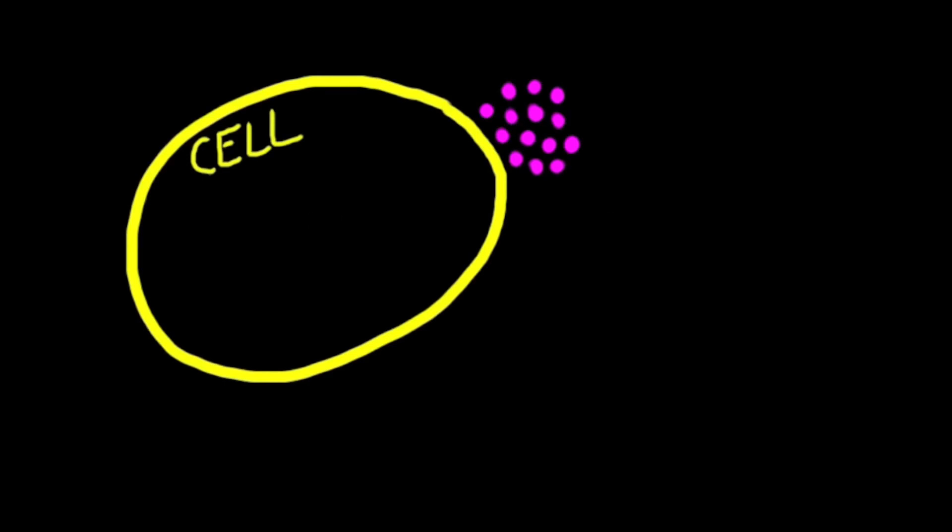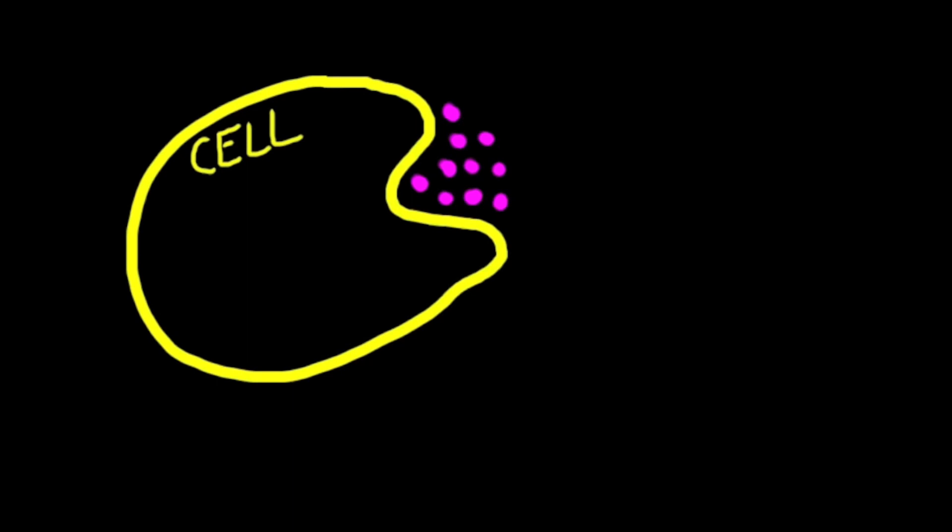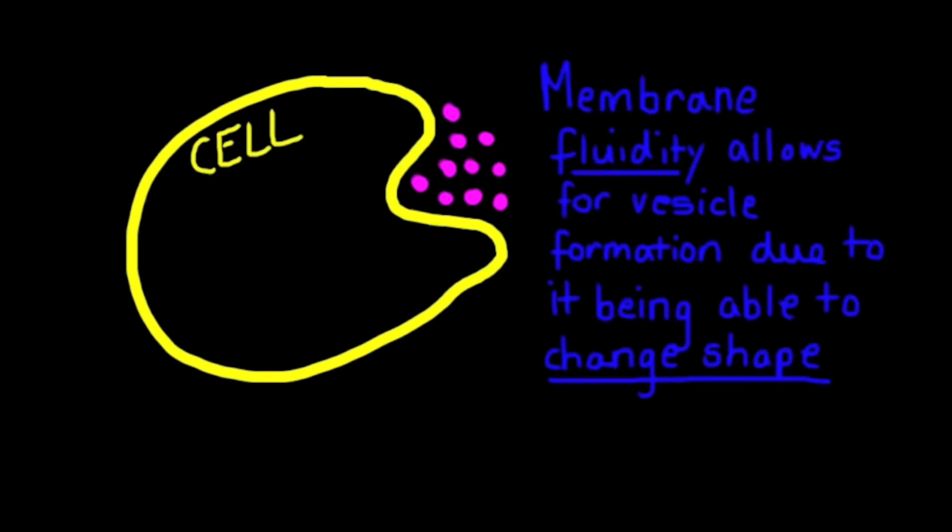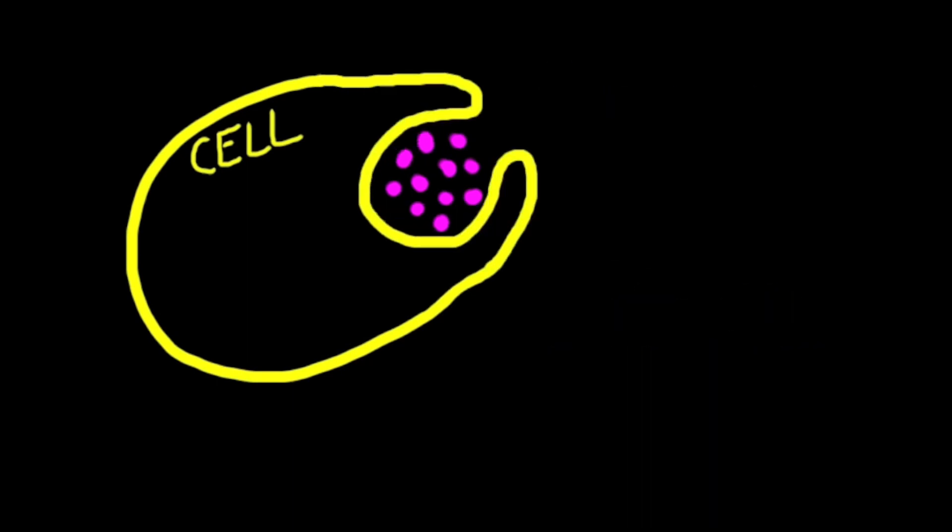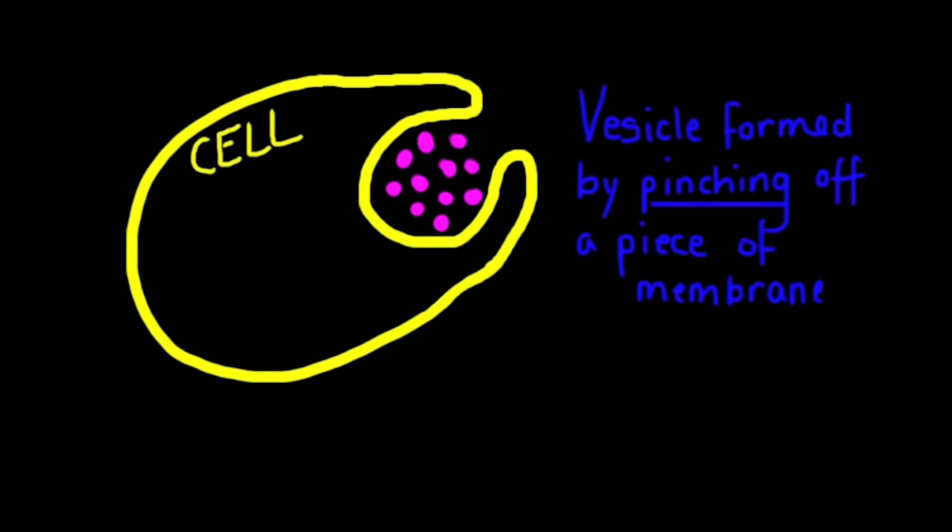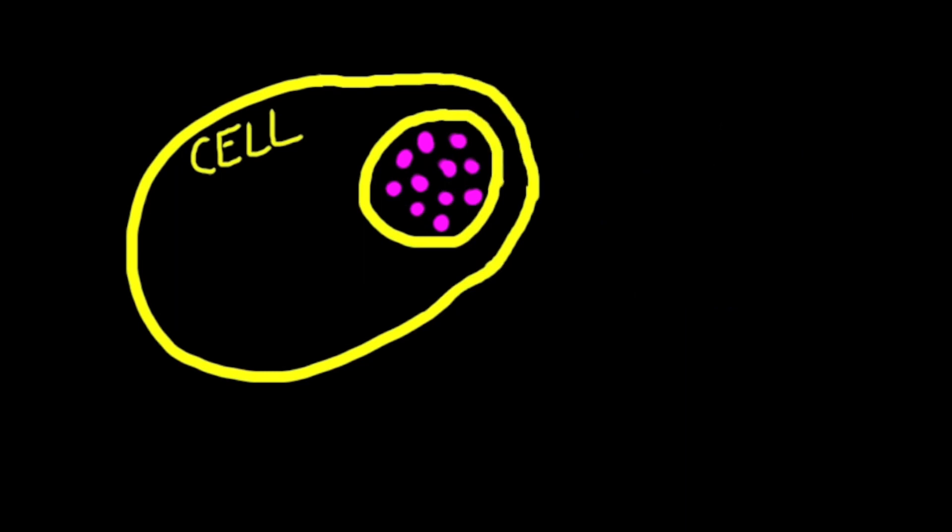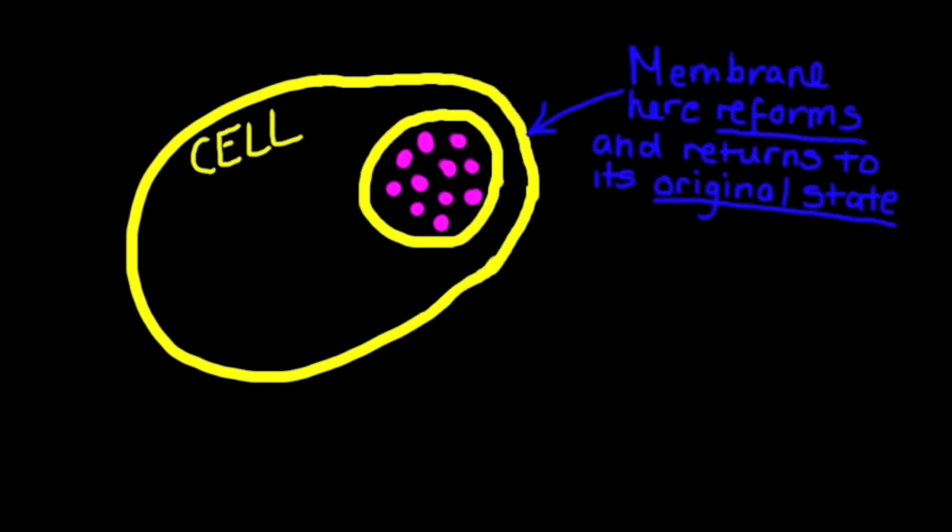In endocytosis, the fluidity of the cell membrane allows for it to fold inwards and pinch off to form a vesicle, thus bringing materials into the cell. The cell membrane is able to reform and return to its original state.